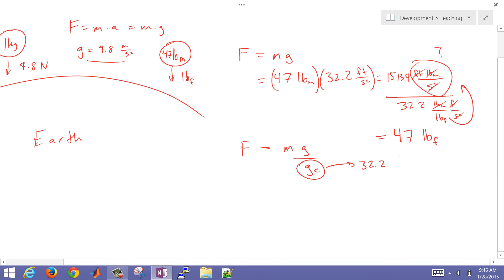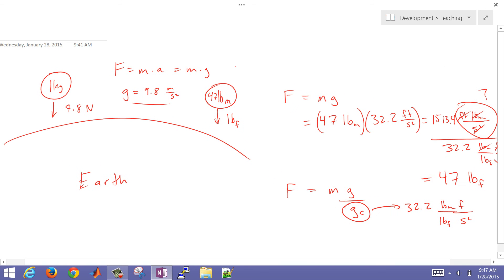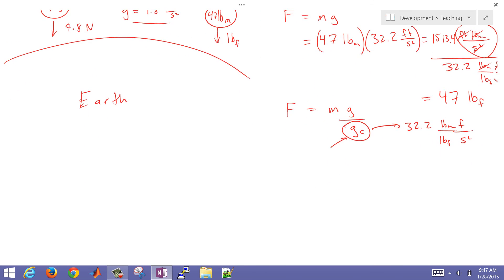and that's pound mass, pound force, foot per second squared. That's the difference between the American Engineering System of Units and SI Units. SI Units also has this GC, but that's just going to be 1 for SI Units.